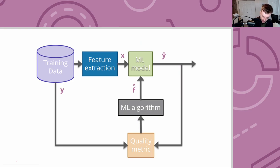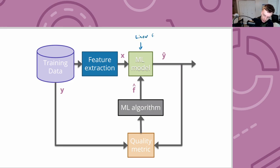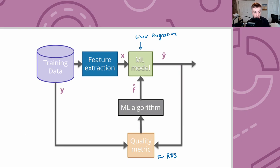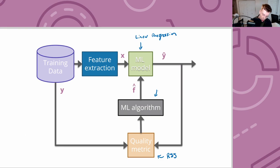We talked about how with the ML model, we're assuming this linear relationship between the input and the output. We also talked about the quality metric for regression — the residual sum of squares. Talking about a particular line, trying to identify if this line is good or not, we use the residual sum of squares, which is the sum of the squared errors. If that's a large value, it has lots of error; if it's a small value, it has a little error.